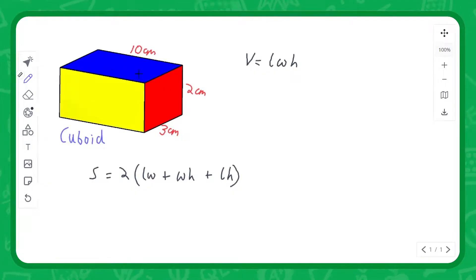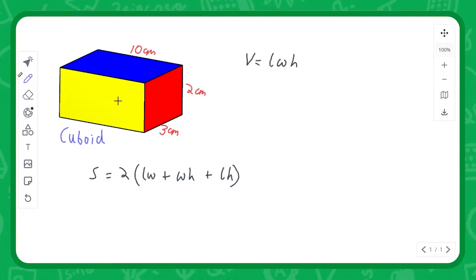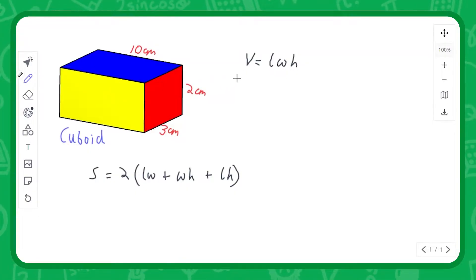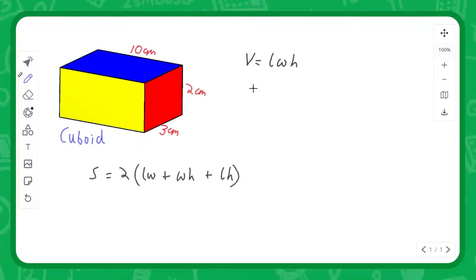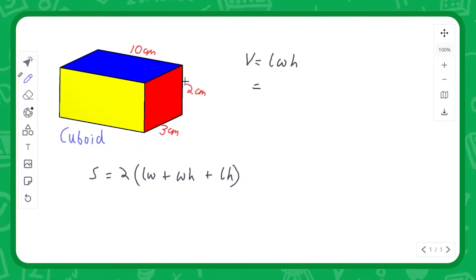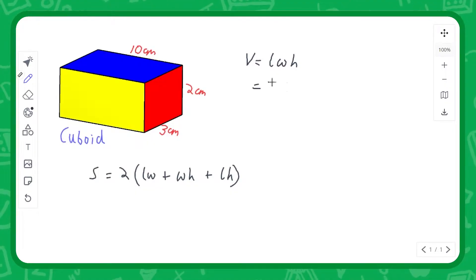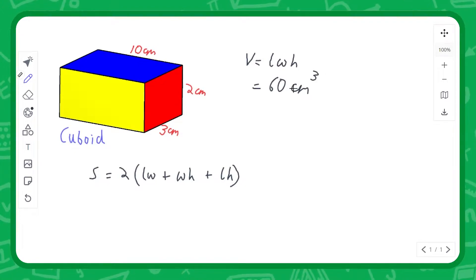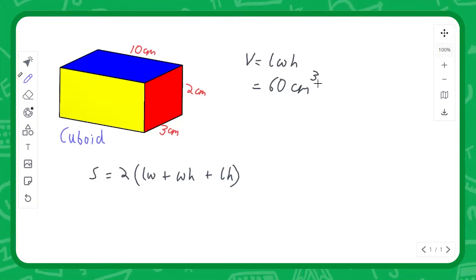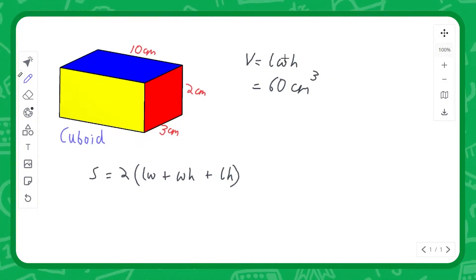Volume is the amount of space inside — for example, how much water you could use to fill up a tank. The volume for a simple cuboid is calculated by doing the length times the width times the height: L×W×H. In this case we've got 10 times 2 times 3, which is 60 centimetre cubed, as volume is measured in cubes, whether it's centimetre cubed or metre cubed and so on.